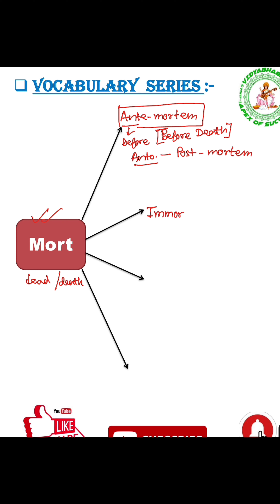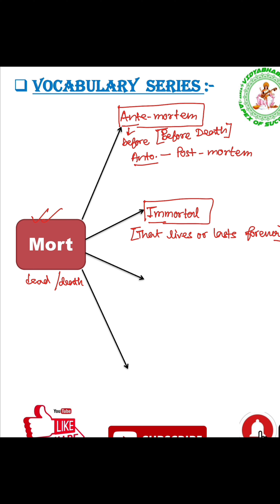The next word is 'immortal'. Immortal: the prefix 'im' means negative or not. So immortal means not mortal — that which lives or lasts forever. The antonym of immortal is mortal.